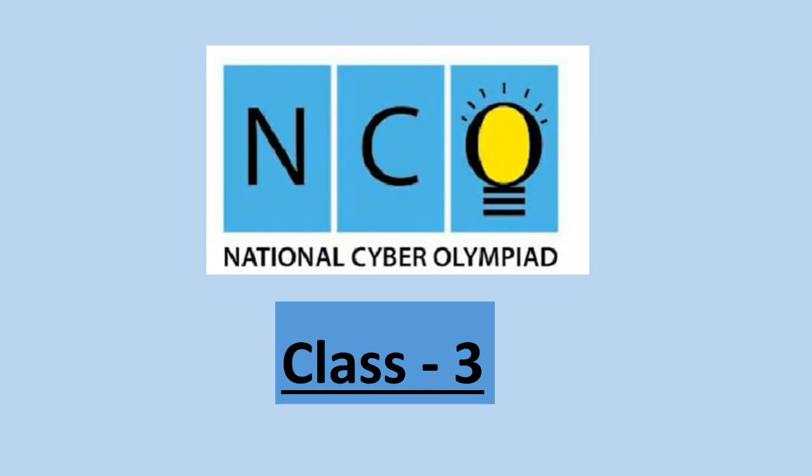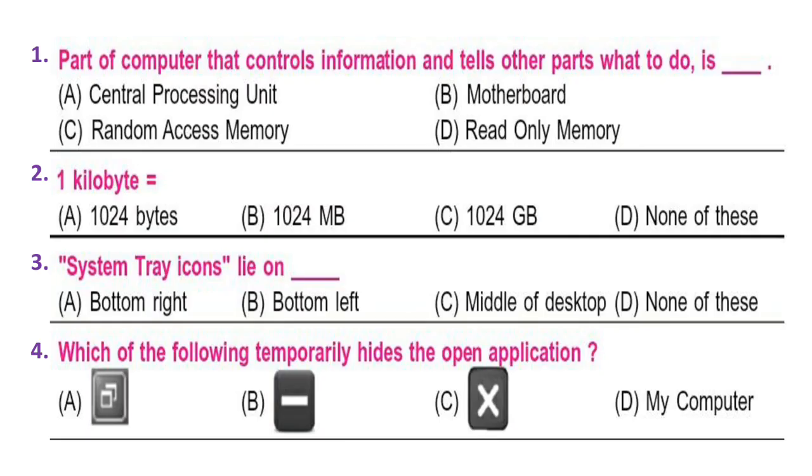Let's start with the first question. Part of computer that controls information and tells other parts what to do is: A. Central Processing Unit, B. Motherboard, C. Random Access Memory, D. Read Only Memory. Think about your answer and write it down. Question 2: One kilobyte is equal to: A. 1024 bytes, B. 1024 MB, C. 1024 GB, D. None of these.